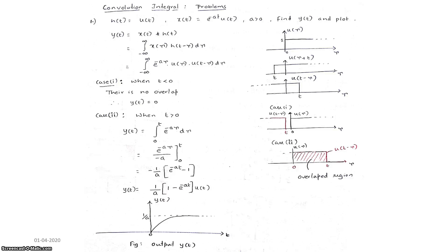To plot y(t), apply different values of t to the equation. If t equals 0, we get 1/a times (1 minus e to the power 0) equals 1/a times (1 minus 1) equals 0. So at t equals 0, the output is 0. As t approaches infinity, e to the power minus infinity equals 0, so y(t) approaches 1/a. The output increases from 0 and approaches 1/a as t goes to infinity. This completes the problem for both infinite signals.